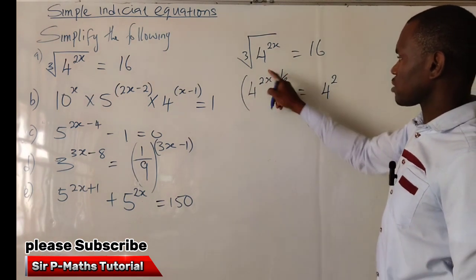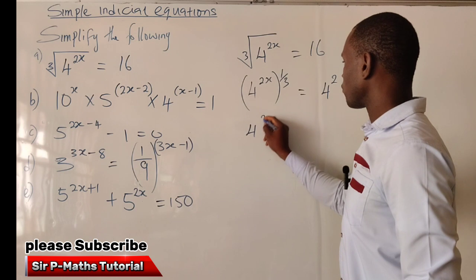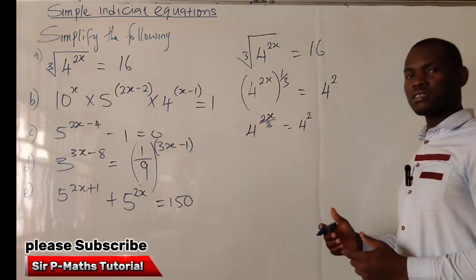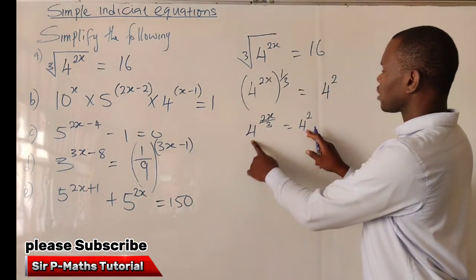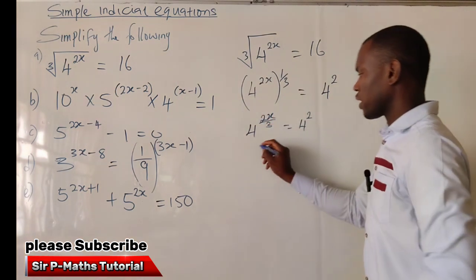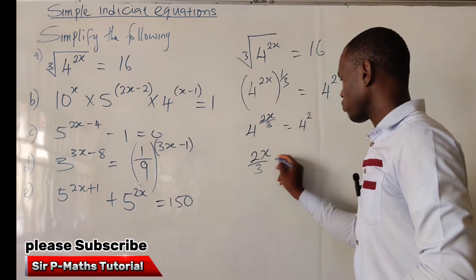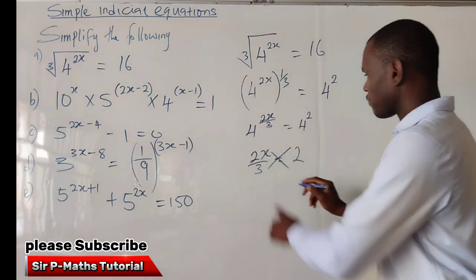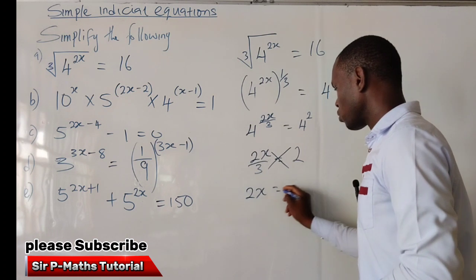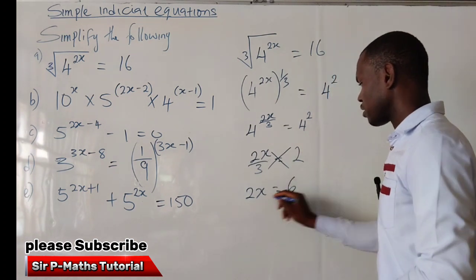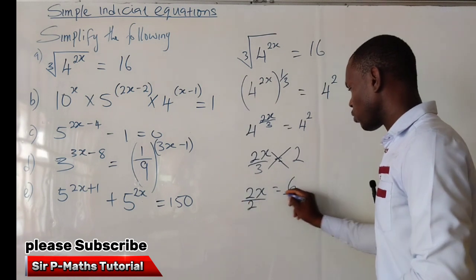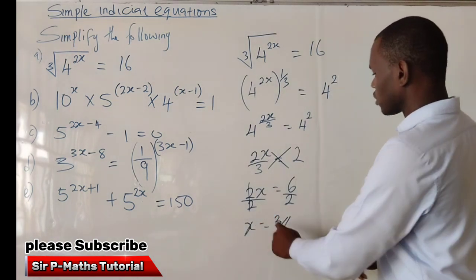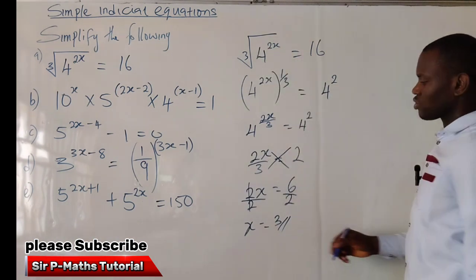At this point, the two powers can multiply together, giving us 4 raised to the power of 2x over 3, equal to 4 raised to the power of 2. One of the laws of indices says that whenever two bases are equal, their powers are also equal. So I can equate the powers: 2x over 3 equals 2. Cross-multiplying gives 2x equals 6. Dividing both sides by 2, we get x equals 3.